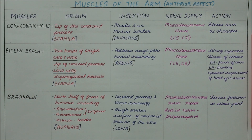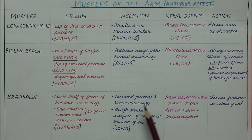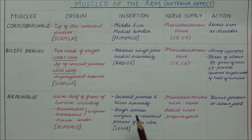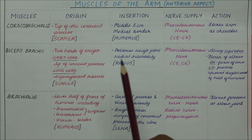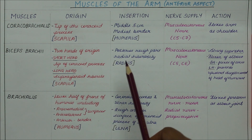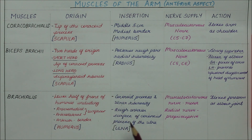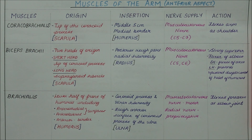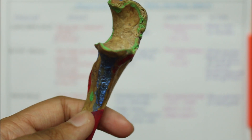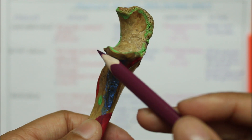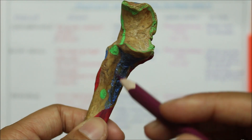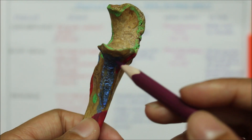Moving on to its insertion, the brachialis is inserted into the coronoid process and ulnar tuberosity and the rough anterior surface of the coronoid process of the ulna. An easy way to remember this is that as the biceps brachii was inserted into the radius, the brachialis is inserted into the ulna. You can see the insertion into the coronoid process and the ulnar tuberosity right here.